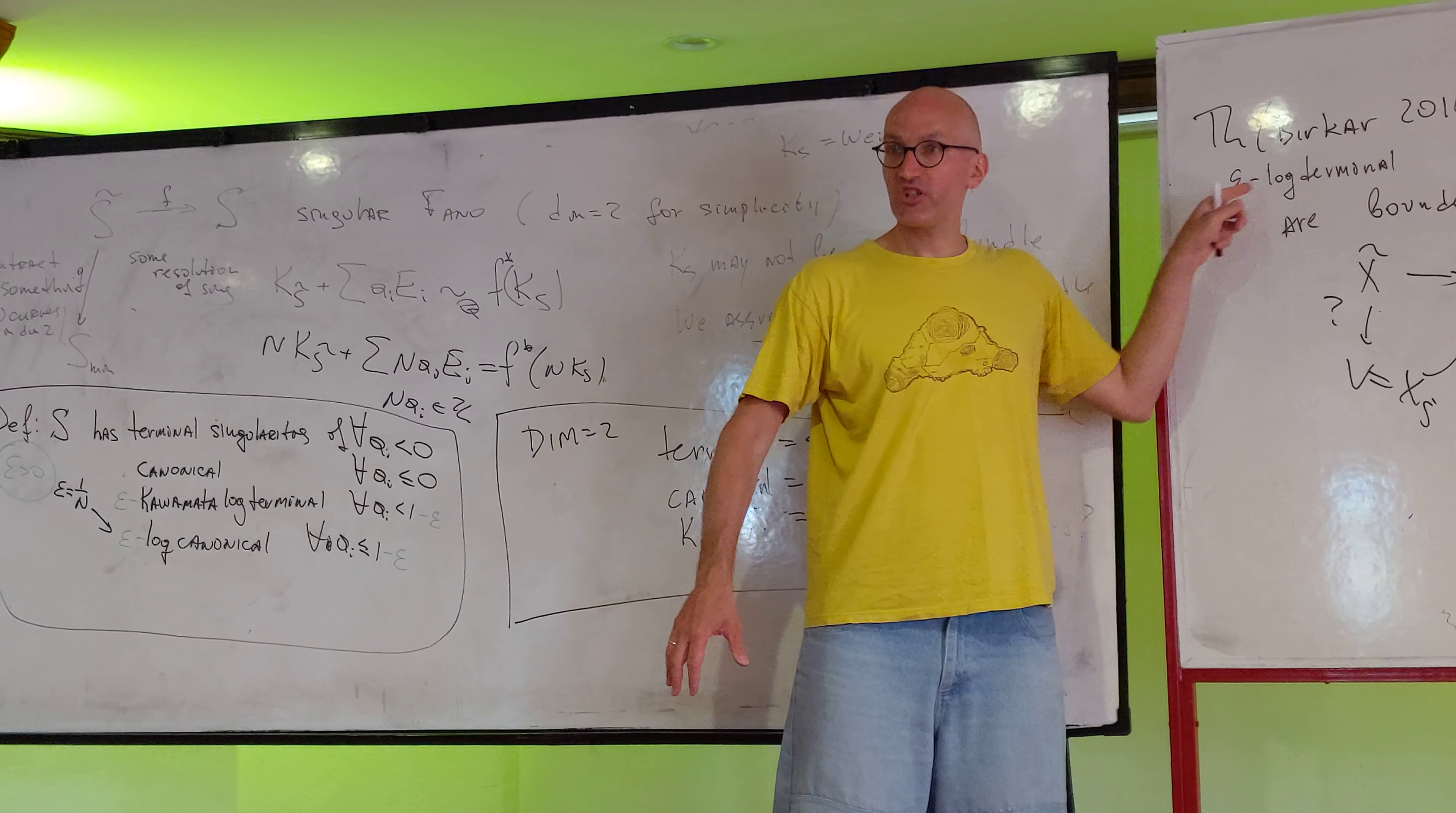Okay, so this is a very nice condition, and this epsilon here is just to get a bounded class. And the most important case for epsilon is actually one, and then you get terminal varieties. This is the main application.